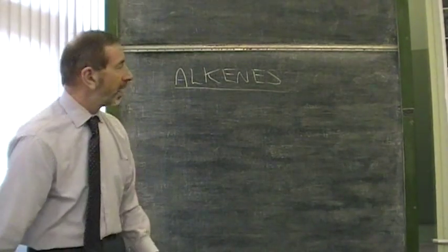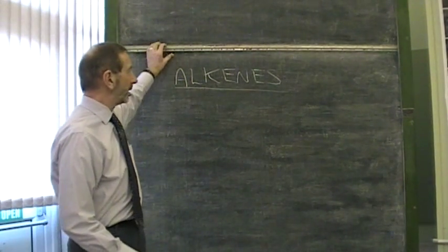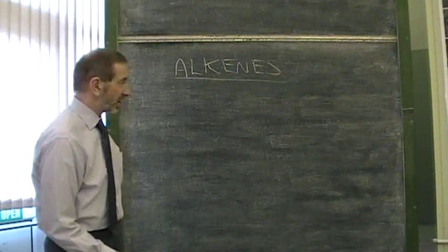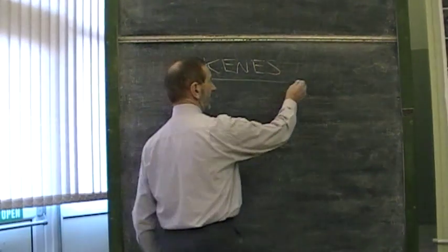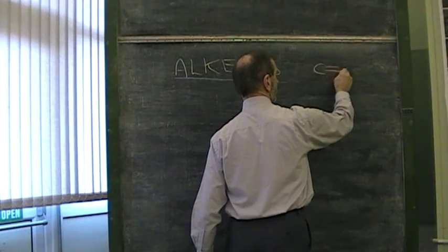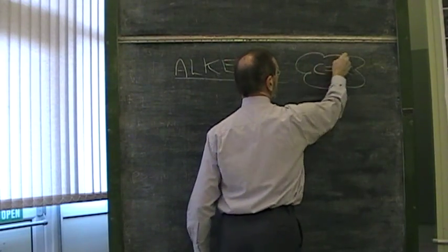The chemistry of alkenes. Alkene chemistry. The first question is, what is an alkene? Well, as you know from your standard grade days, it's a molecule which has a carbon-carbon double bond.